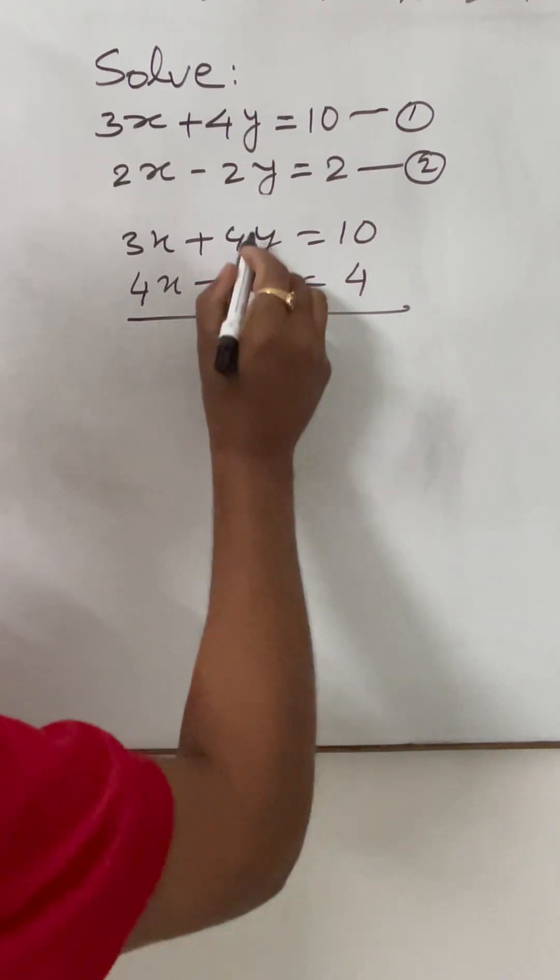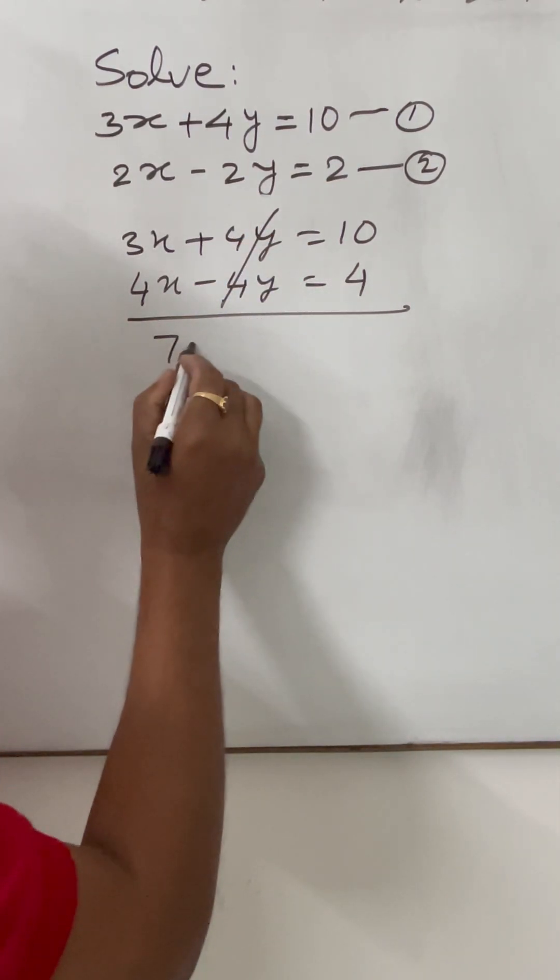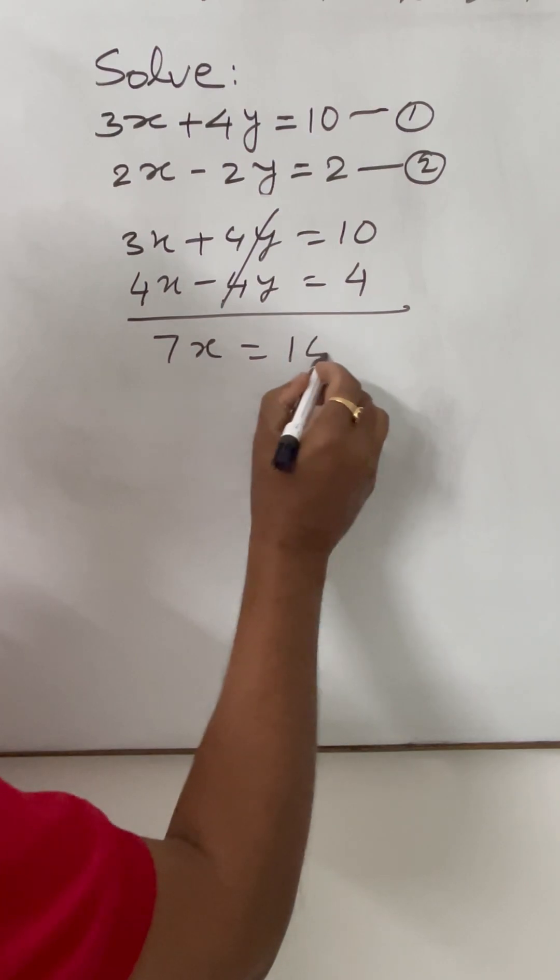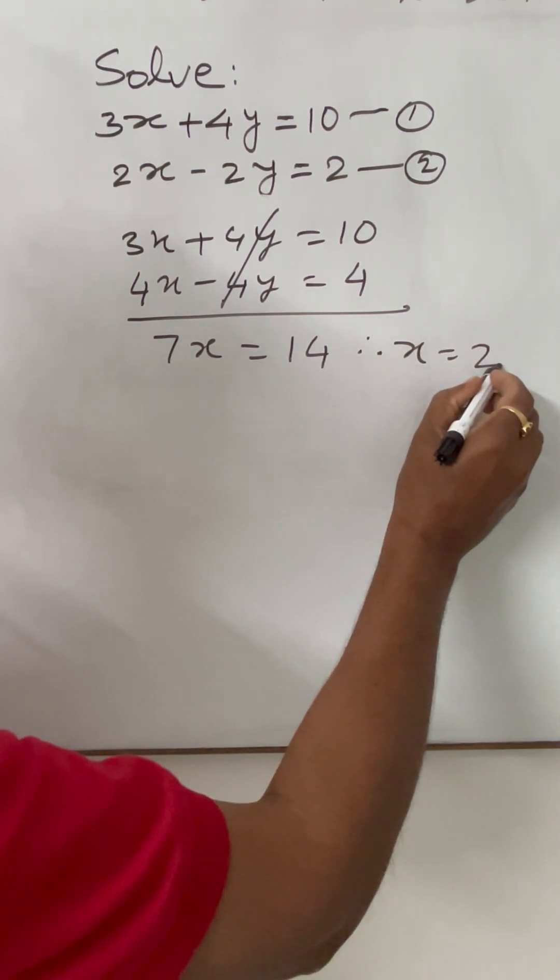Adding these two equations, this is cancel out. So 7x is equal to 14, therefore x is equal to 2.